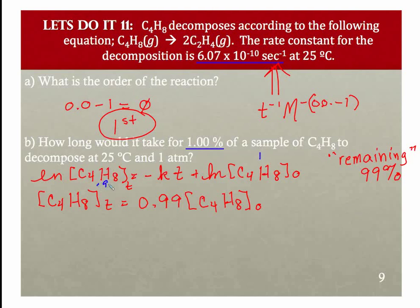If I bring this over to the other side, I'm going to have the natural log of a minus the natural log of b. Well, mathematically that is equal to the natural log of a over b. So if I do that with my symbols here, I'd have my natural log of C4H8 at time t over C4H8 at time 0.